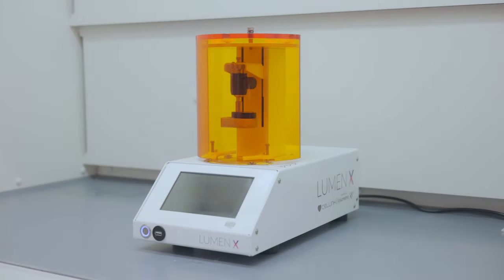The Lumen X is a digital light projection or DLP-based bioprinter. It uses visible light of 405 nanometers to cure liquid resin.